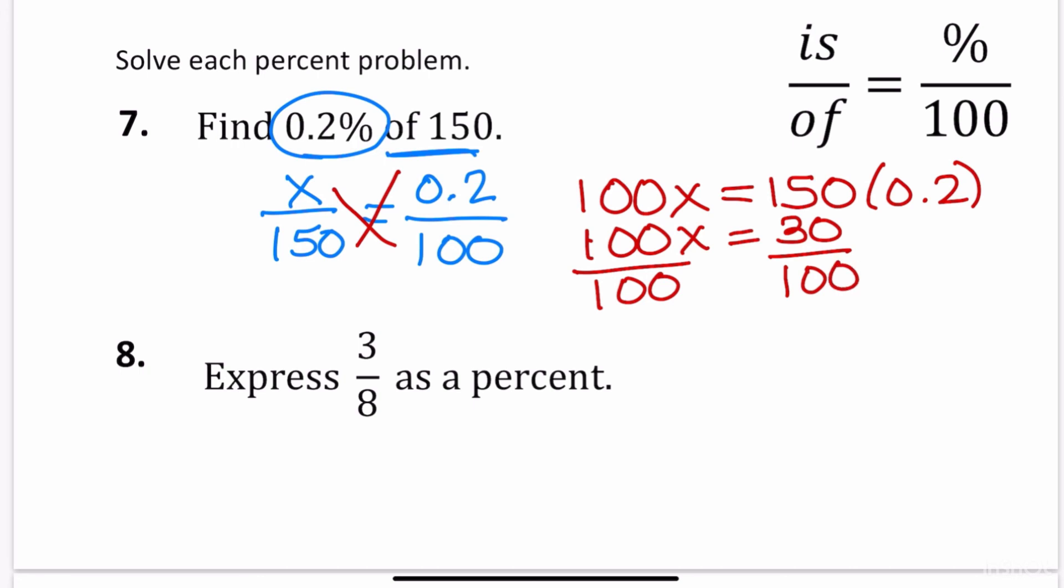Then you divide by 100 on both sides. Because remember, you always divide by the number next to the variable. The goal is to get the x by itself. So the zeros cancel. X is equal to 3 tenths or 0.3 as a decimal. So that means 0.2% of 150 is 0.3.